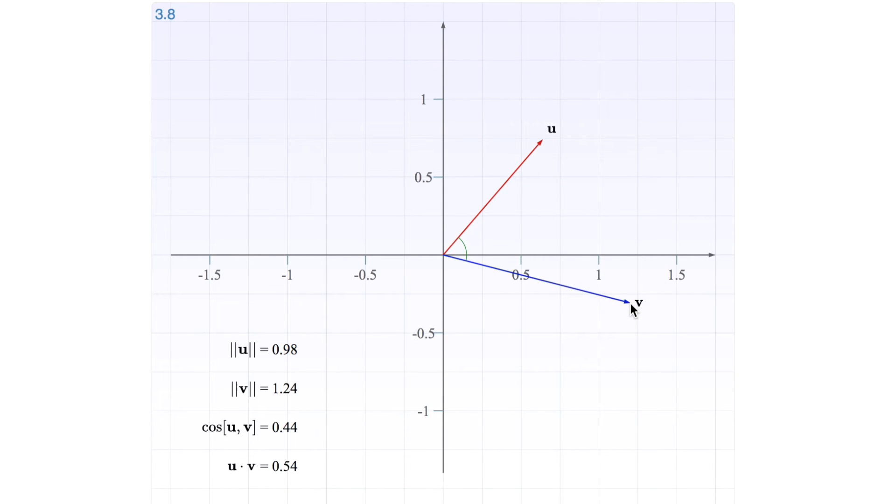So a few things are interesting here. One is that something happens when this angle becomes greater than π/2, which is 90 degrees. If we try to make this 90 degrees around here, you see that the cosine of 90 degrees is zero, so that means the dot product becomes zero.